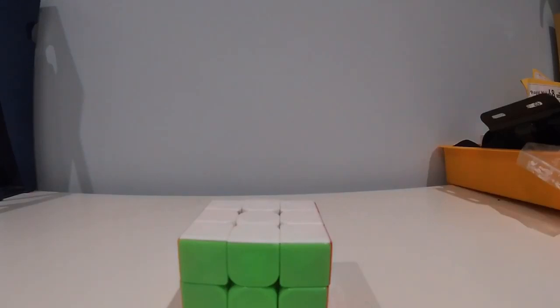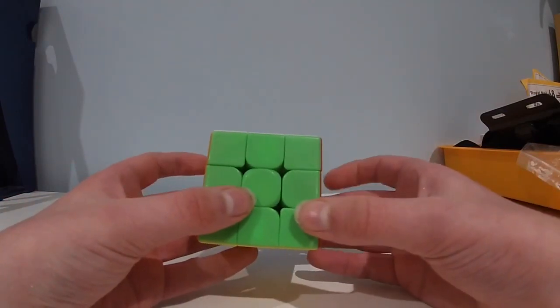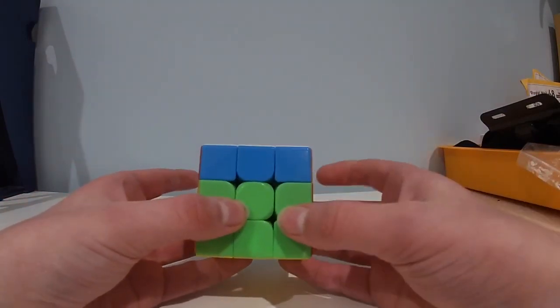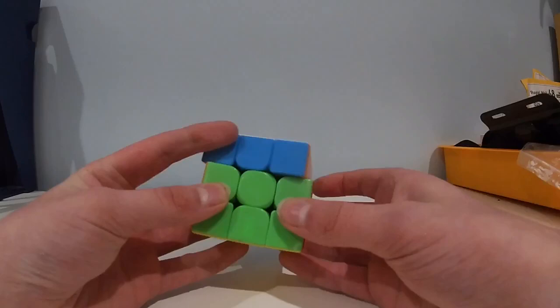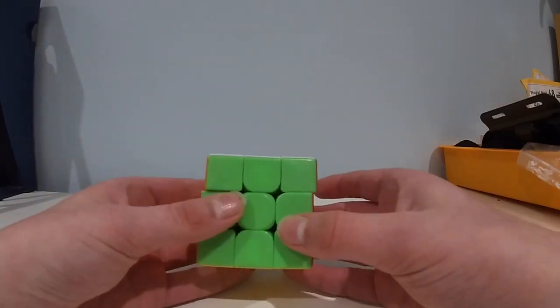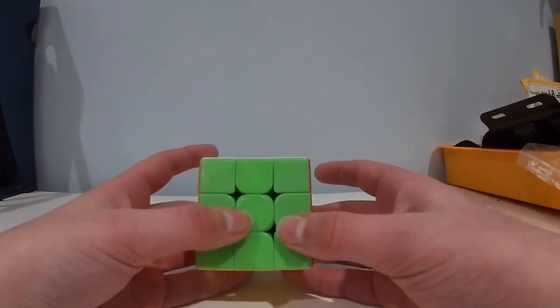Those are all the basic finger tricks you need to get faster at Rubik's cube. These can take you to sub 15 probably. Once you get faster, you may want to learn some more complicated ones like aidos and this sort of U-priming thing, but they're not important until you're getting fast.